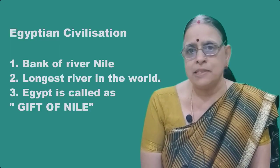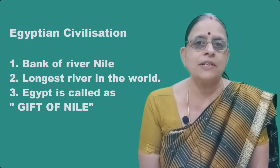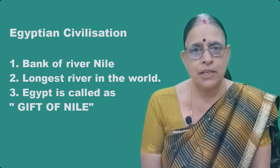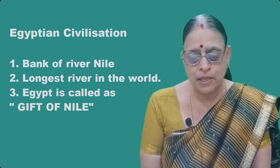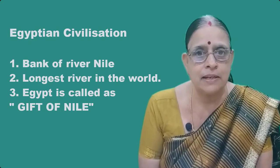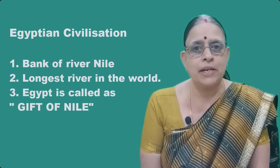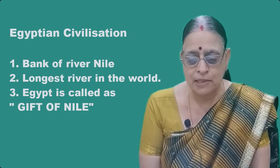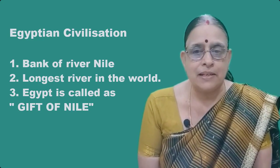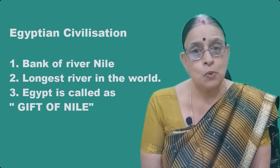Now let us move to the Egyptian civilization. This is considered as the first ancient civilization — ancient means oldest. Egyptian civilization originated or took birth on the bank of the river Nile. Nile is the longest river in the world and it is a major north-flowing river in Africa. River Nile is in the continent of Africa and it flows north and joins the Mediterranean Sea. Without Nile, Egypt would have been a desert. So Egypt is also called as the gift of the Nile, because Nile made Egypt flourish its civilization and it became the world-famous oldest civilization.